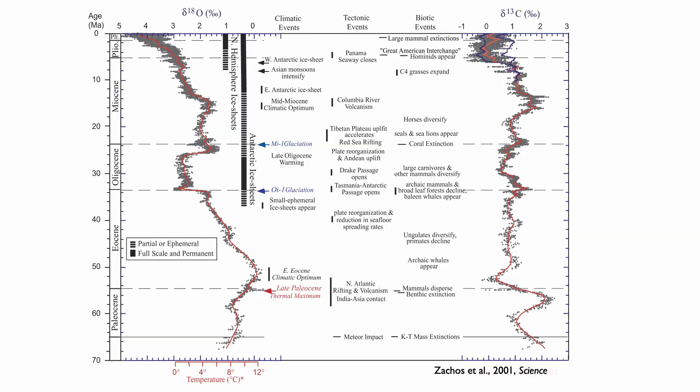This has led to really useful work in paleoceanography. In particular, I'm showing you a compilation from Jim Zachos, with oxygen isotopes on the left and carbon isotopes on the right. This compilation is from all oceans of the world, using benthic foraminifers. The important point is that there is a clear pattern in the change of both oxygen and carbon isotopes.